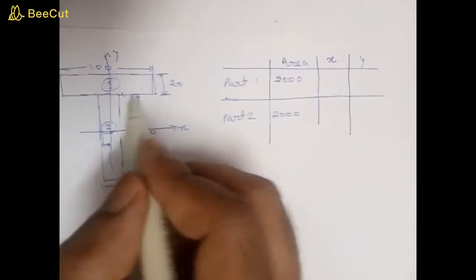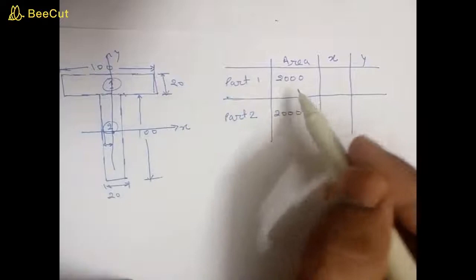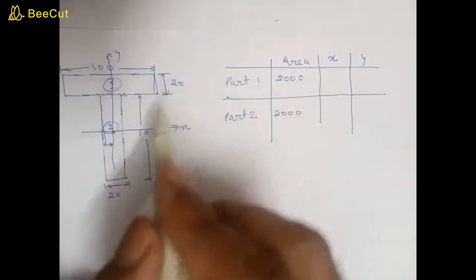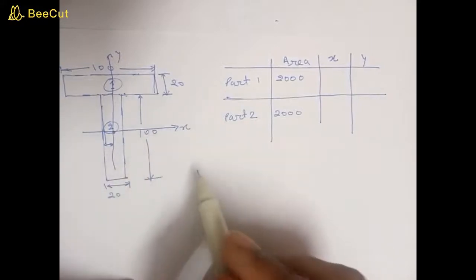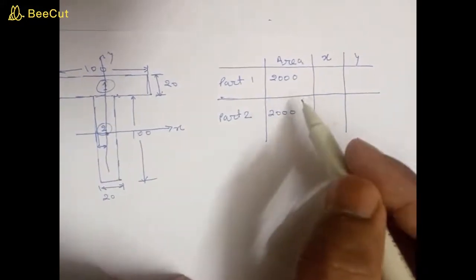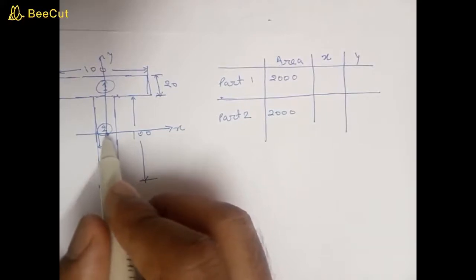Because it is a rectangle, so area will be breadth into height. So it is 2000 square meters. For part two also, area is 20 into 100, so 2000 square meters. And suppose we have taken the origin, assumed that origin is at the middle of part two.